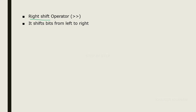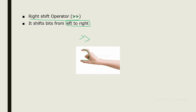The right shift operator is represented with two greater-than symbols (>>). Bits will be shifted from left to right. A simple way to remember: make a C symbol with your right hand - the opening of the mouth faces this side. That symbol represents the right shift operator (>>). Just remember it this way.